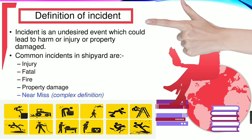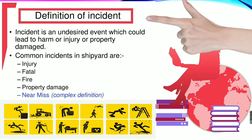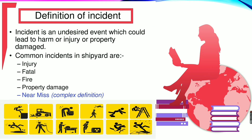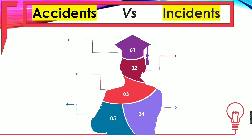An incident is an undesired event which could lead to harm, injury, or property damage. Common incidents in a working place like a shipyard or hangar include injury, fatal fire, property damage, and near misses. That is the complex definition — we will differentiate each of them in the next slide.